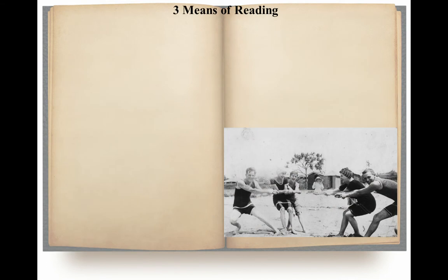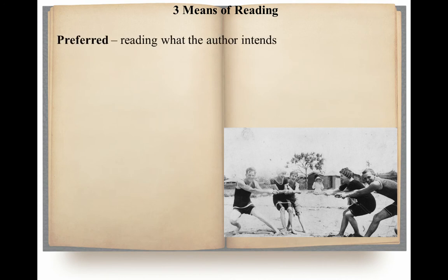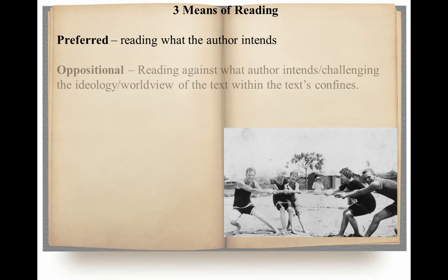That brings us into this idea of reading — there are three means of reading a text. When I say a text, that could be a speech, an actual writing, or a movie. Really, I'm talking about how we interpret, how we make sense of something. The first is the preferred reading, and that's authorial intent: you read a text in the way the author intends. You read the story and you agree, you understand, you appreciate the message, the moral, the theme of the story.